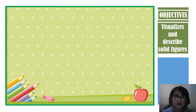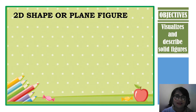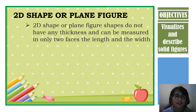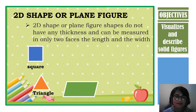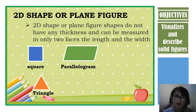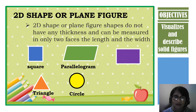Let us have a review on the 2D shape or plane figure. 2D shapes or plane figures do not have any thickness and can be measured in only two dimensions: the length and the width. Can you identify the following plane figures? We have a square, a triangle, a parallelogram, a circle, a rectangle, and a trapezoid.